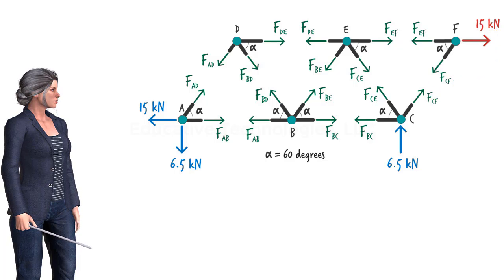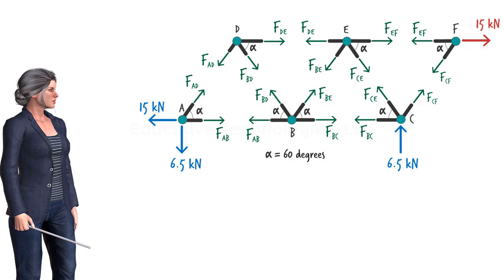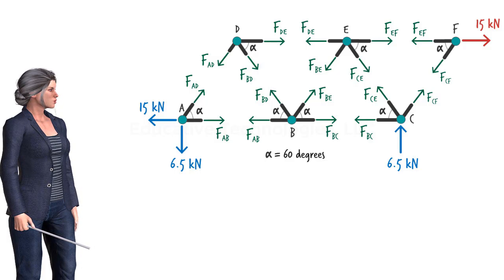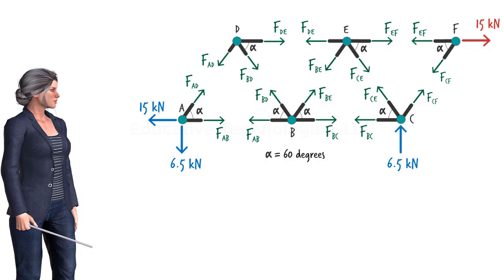Now that we have isolated and shown the member forces acting at each truss joint, we are in a position to start calculating the unknown forces. Since the truss is assumed to be in a state of static equilibrium, the equilibrium equations must be satisfied for each truss joint.